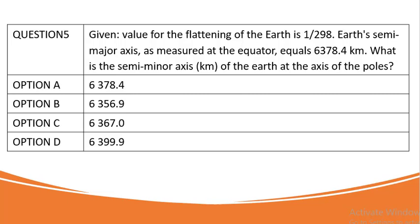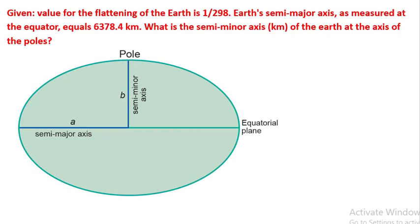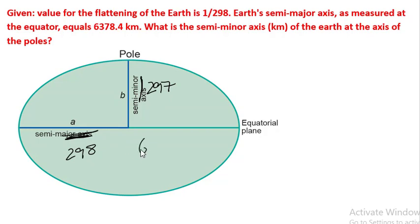Let us understand the question. The question states that if the semi-major axis is 298, then the minor axis — that is, from the pole to the center of the earth — would be one less, that is 297. Now if the value of the major axis is 6378.4 kilometers, then what should be the value of B, which is the semi-minor axis?